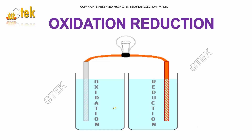Here is oxidation and reduction. Oxidation is nothing but loss of electrons, and the gaining of electrons is called reduction. So oxidation is loss and reduction is gain.